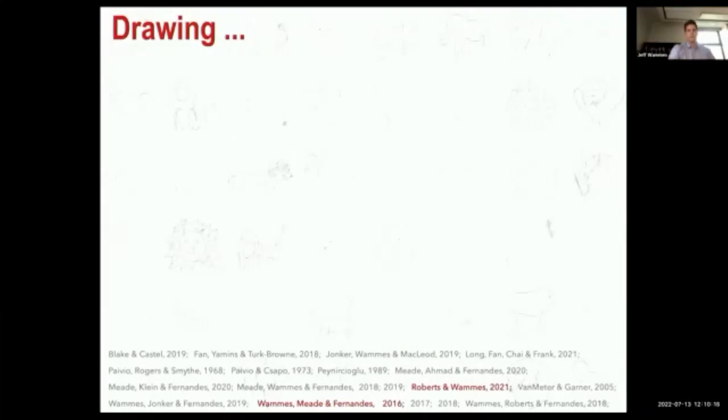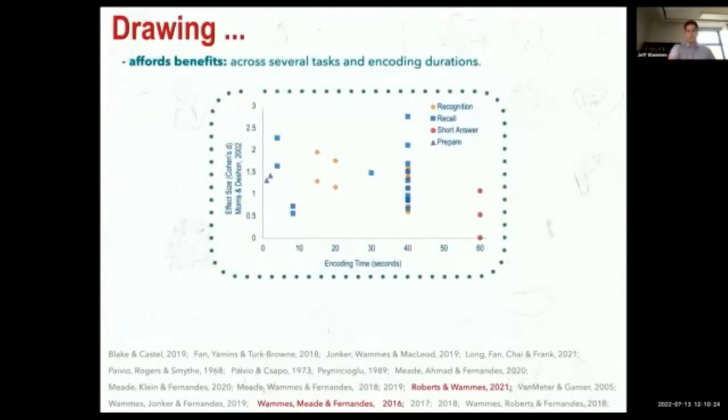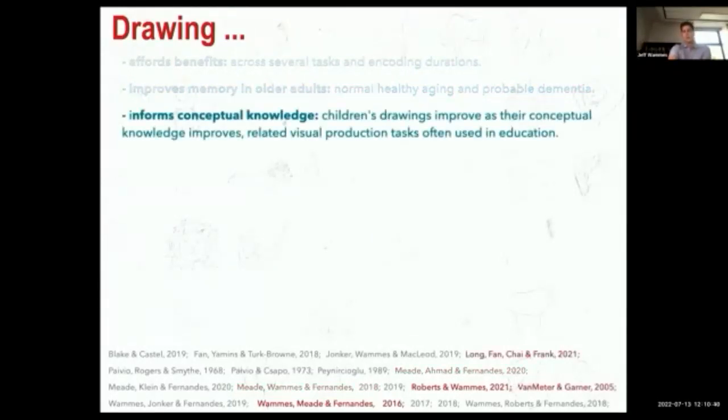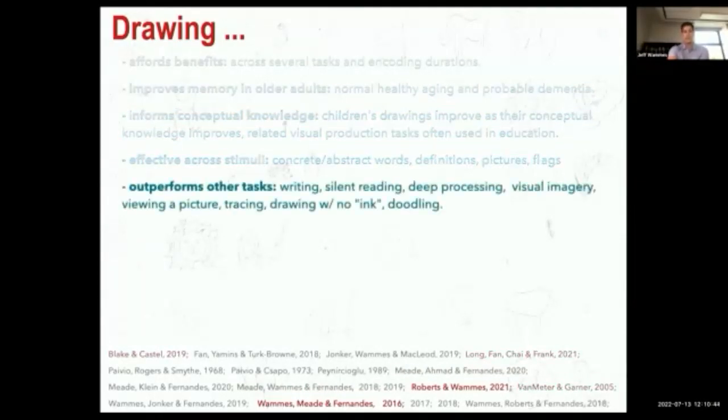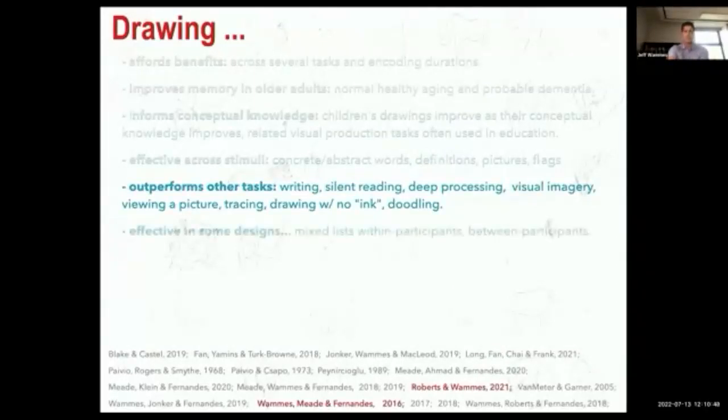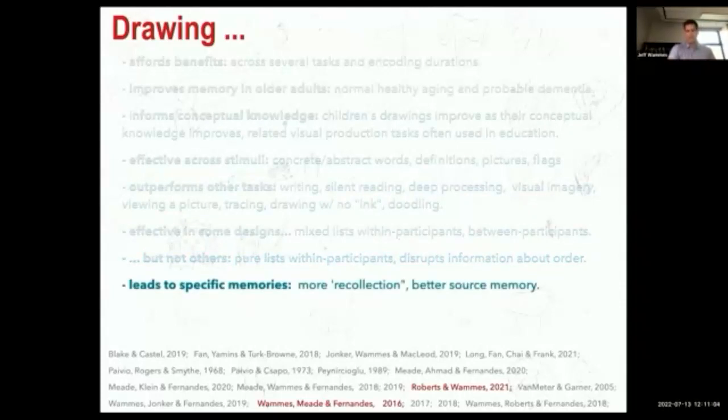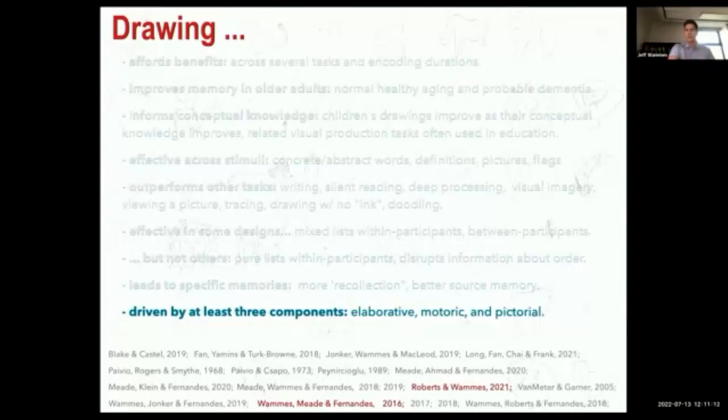So that was the major mechanism that we invested our time in. But through a series of experiments from my group but also from others in the field, some of which are here, we found that drawing benefits memory—this is just data from some of our studies across several tasks and encoding durations. It improves memory disproportionately in older adults, both normal healthy aging and people with probable dementia. It informs conceptual knowledge, seems to be effective across stimuli, outperforms several other tasks, some of which I've shown you. It seems to be effective in some designs but not others. Specifically, drawing can disrupt the sort of inter-item relational information that you get when people are doing list learning. It leads to highly specific, richly contextual memories, and I think it's driven by at least three components: the elaborative, motoric, and pictorial that I discussed earlier.